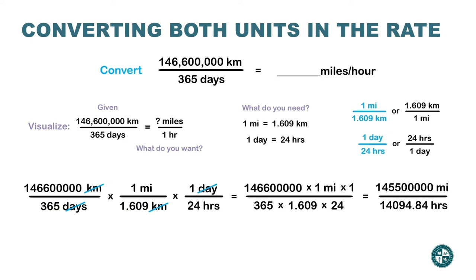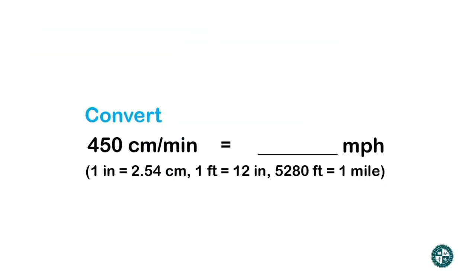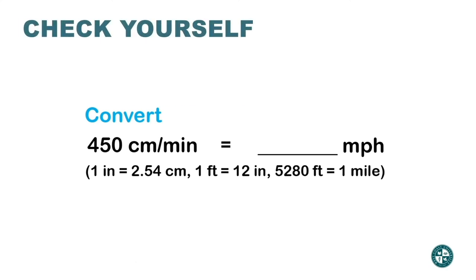Now multiply top with top and bottom with bottom, then simplify. Look how big those numbers are — divide the top by the bottom and that gives the final answer. I changed the units on both the top and the bottom of the fraction, using one fraction to cancel the top unit and another fraction to cancel the bottom unit. Now it's time to check if you understood this process. Try the practice problem, hit the pause button, work it out, and when you're ready hit play to check yourself.